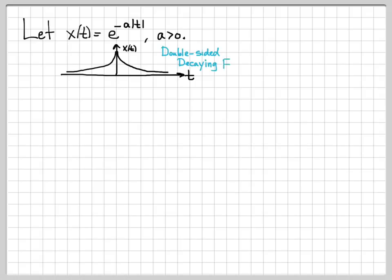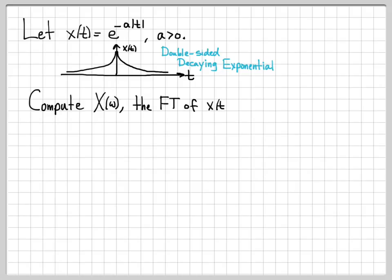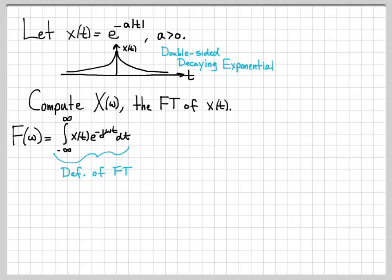This is a double-sided decaying exponential function, and we are going to compute the Fourier transform of x(t), which we call X(ω). So let's compute the Fourier transform of x(t), starting off just by using the definition. This is just the definition of the Fourier transform of the signal x(t).